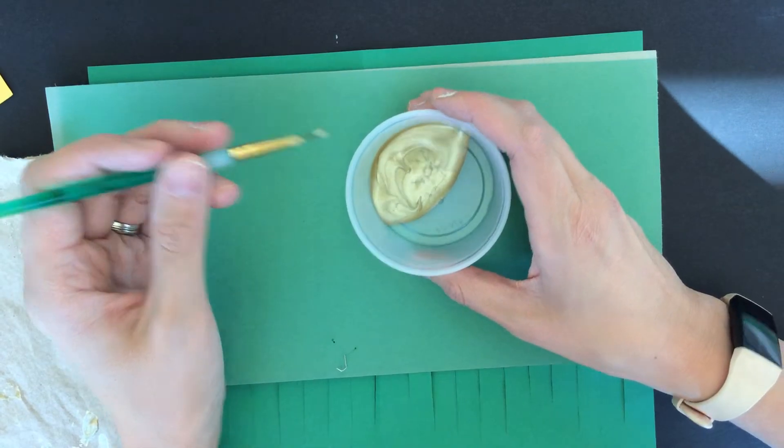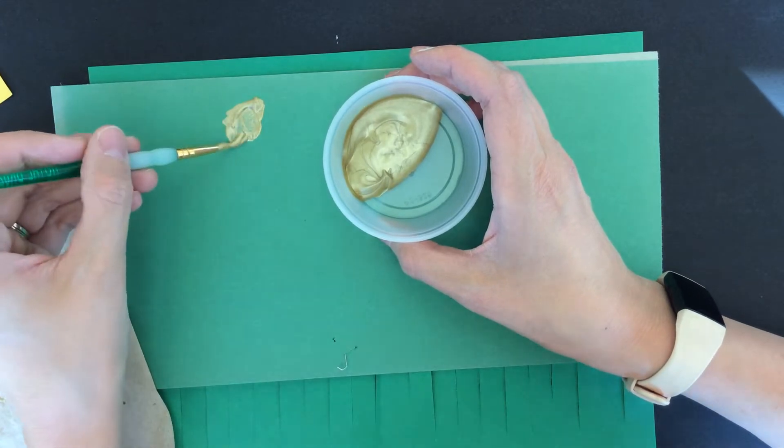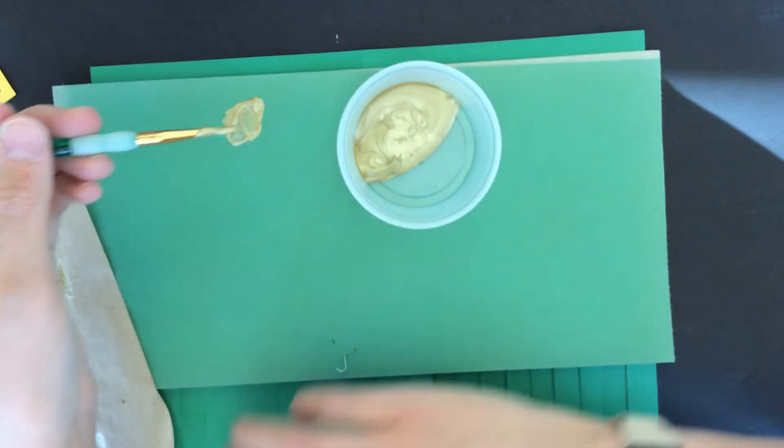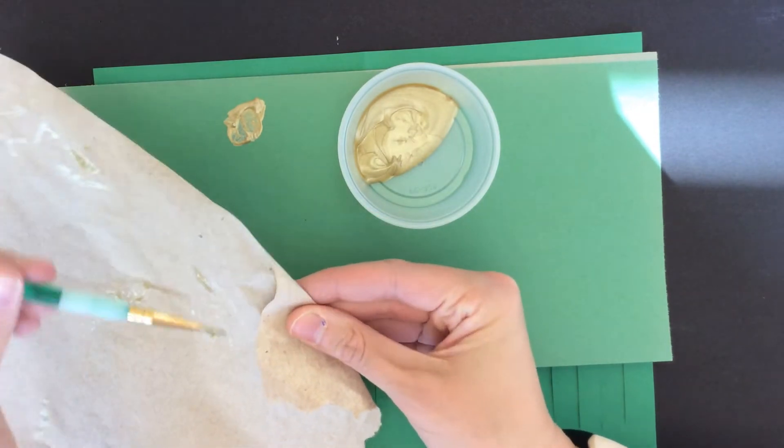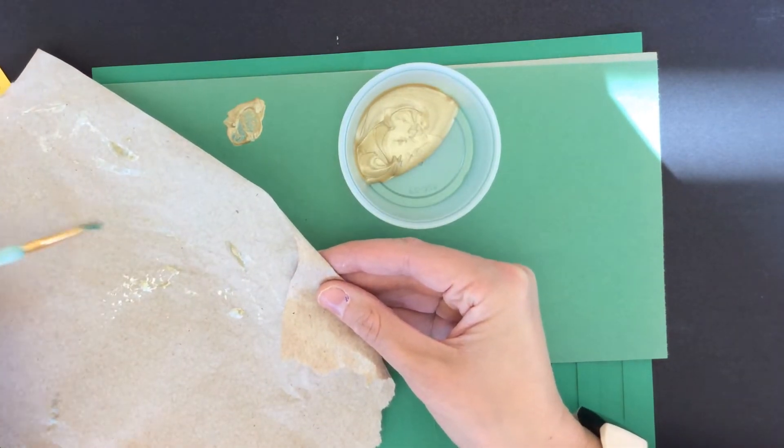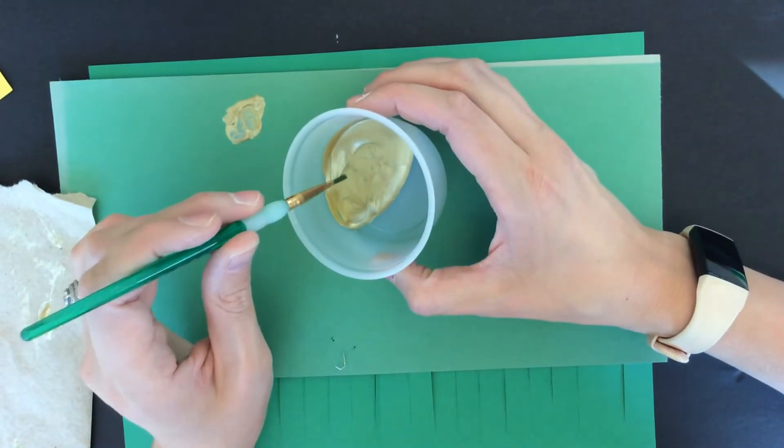So just dip the tip. We don't want to glob it like this. When we glob it like this, we get a whole lot of paint on there and it's hard to control it. If you forget and accidentally do that, just wipe it off on your paper towel. We're not using water for this particular lesson because we're not switching colors, so just wipe it on your paper towel.